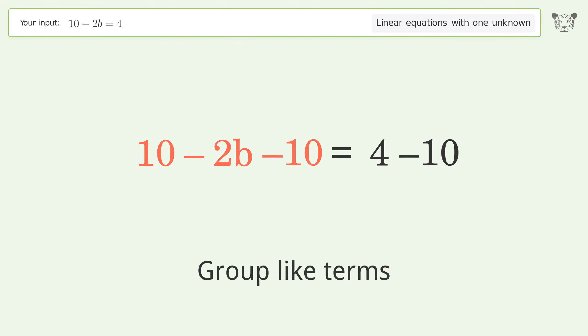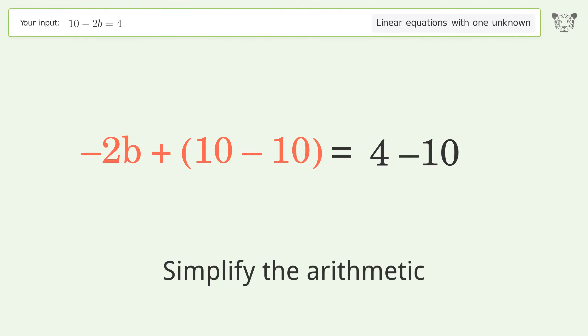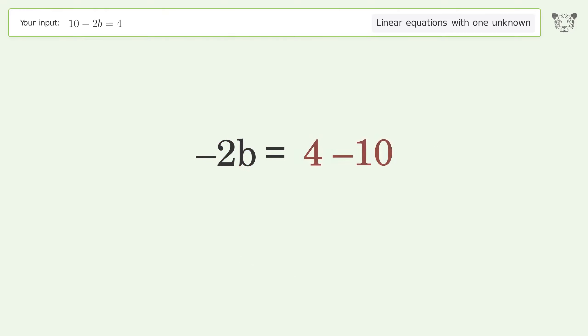Group like terms. Simplify the arithmetic. Isolate the b. Divide both sides by negative 2.